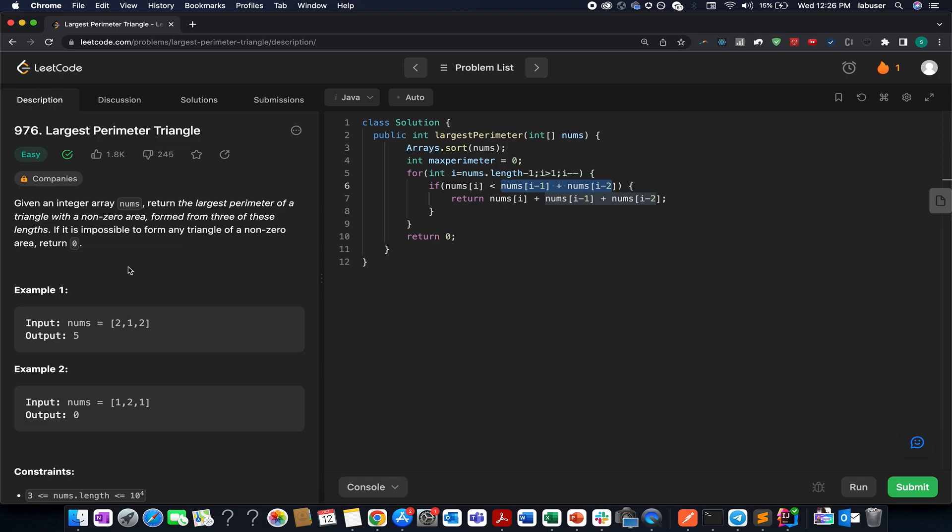Day 12 of October LeetCode challenge - the problem we have is Largest Perimeter Triangle. Guys, apologies, there is renovation going on at my place and I am not able to post videos right now.